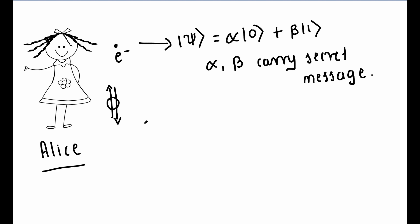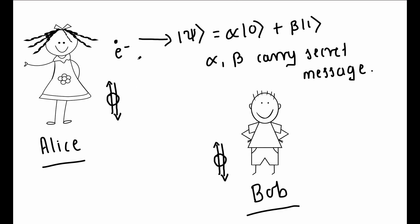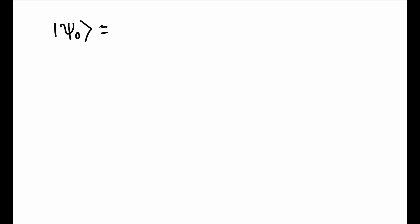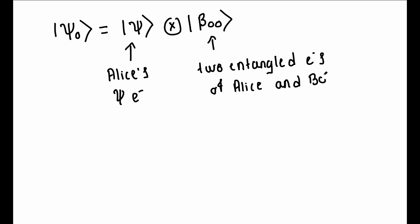Now Alice has two electrons and Bob has one electron. The total quantum state of these three electrons is written as ket psi 0, which is equal to ket psi tensor product with ket beta 00. So ket psi 0 is equal to 1 by root 2 alpha into ket 000 plus alpha into ket 011 plus beta into ket 100 plus beta into ket 111, where comma separates the two electrons of Alice and Bob.